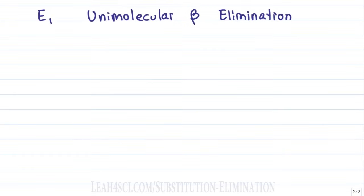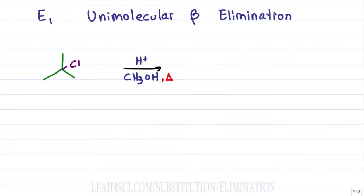E1 stands for unimolecular beta elimination. This is similar to the SN1 reaction and is often in competition. We'll demonstrate this using the same starting molecule and reagent. The only difference is that we'll add heat, because this helps favor elimination over substitution. The mechanism begins the same way: the leaving group grabs the electrons binding it to carbon and breaks away to give us a carbocation intermediate — the rate-determining slow step — and the leaving group wanders away in solution.